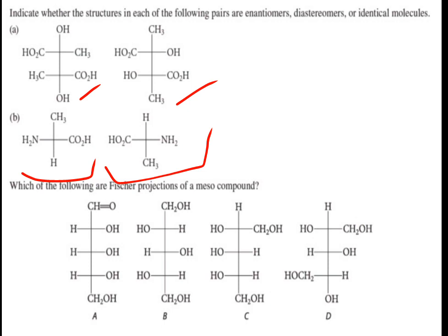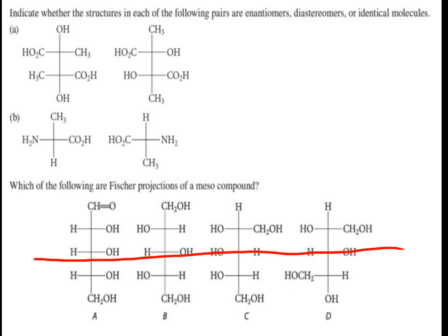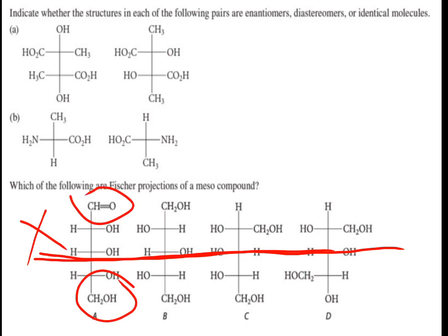The next question asks which of the following are Fisher projections of a meso compound. A hint: to identify a meso compound, find a plane of symmetry. In this case, this is the plane of symmetry, so you don't need to consider that asymmetric carbon. In the first case, one end is CHO and the other is CH2OH, so it is definitely not meso. The second case is a meso compound. For the third and fourth, check whether cyclic permutation of CH2OH and H groups shows them to be non-meso.